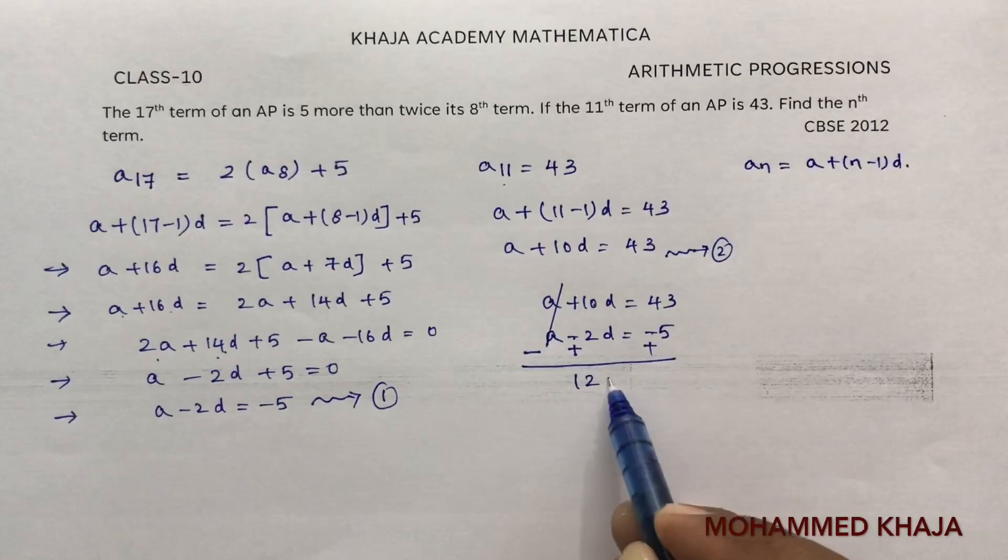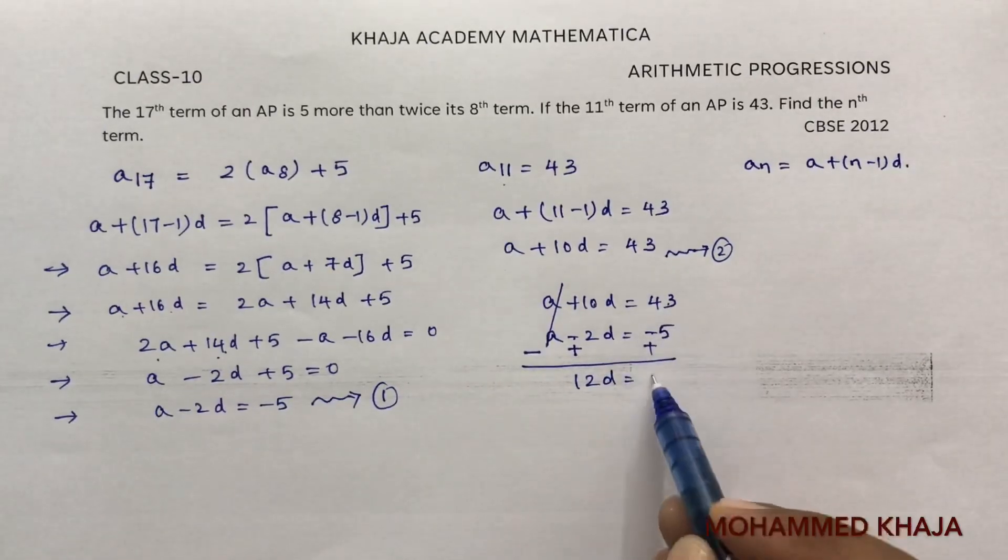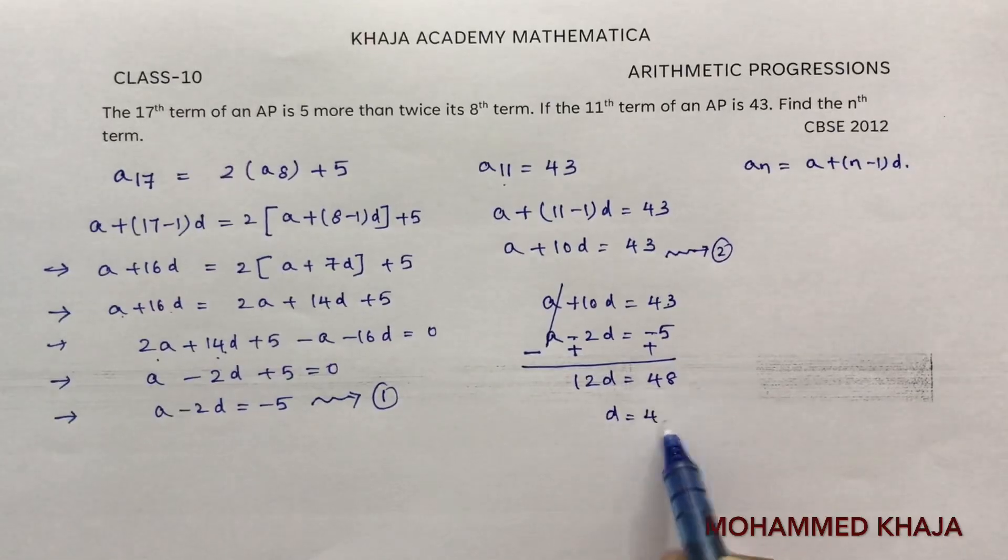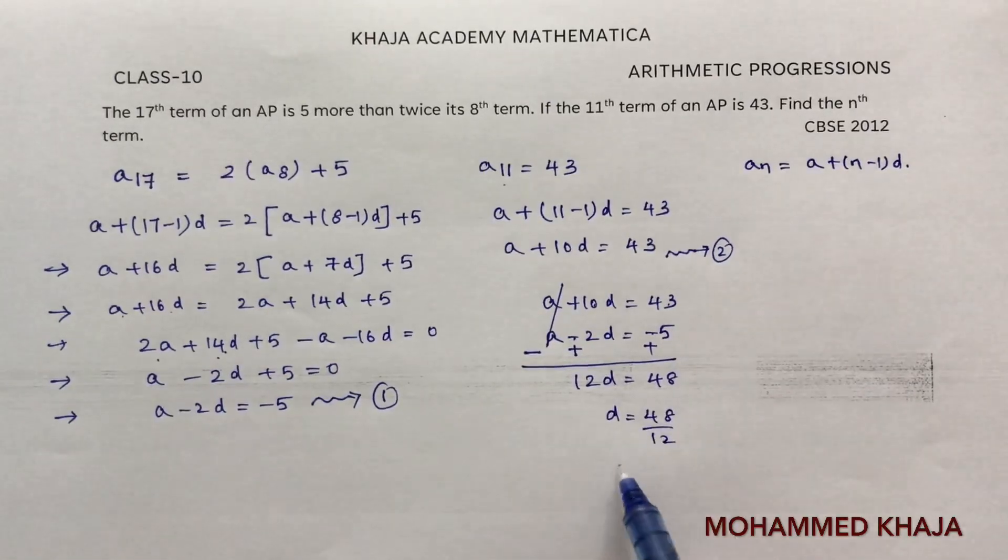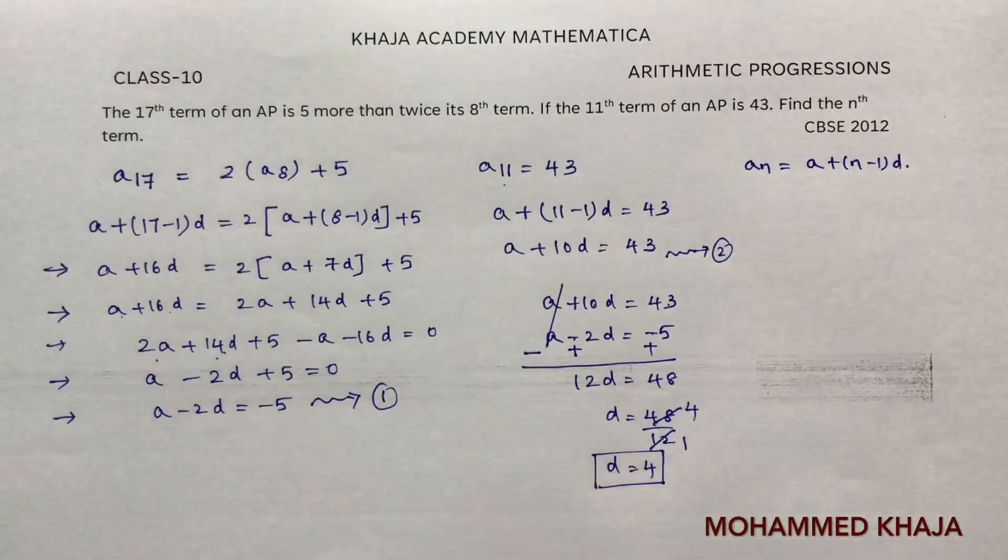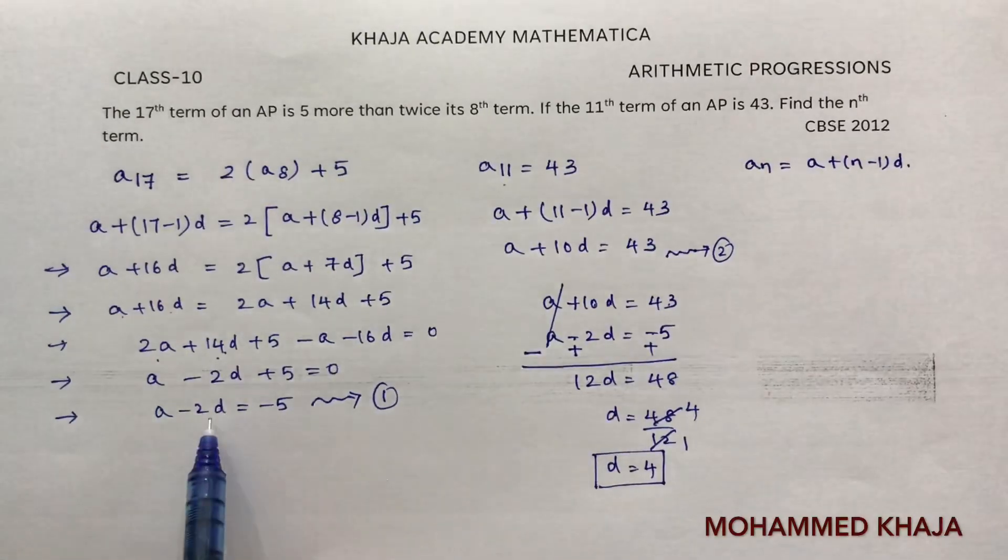10 plus 2 is 12d, 43 plus 5 is 48. So d equals 48 by 12, which is 4. The value of d is 4.